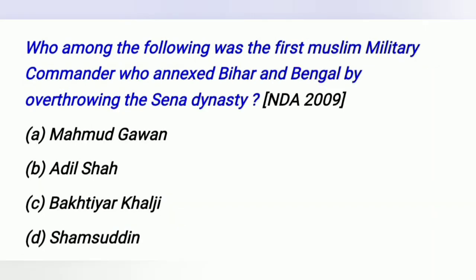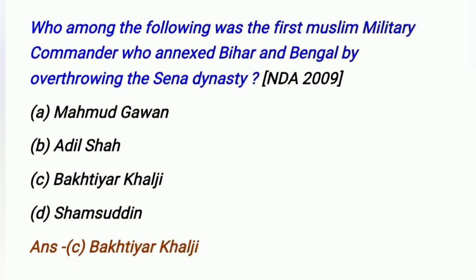Who among the following was the first Muslim military commander who annexed Bihar and Bengal by overthrowing the Sen dynasty? A. Mahmood Gawan, B. Adil Shah, C. Bakhtiyar Khilji, D. Shamsuddin. The answer is Bakhtiyar Khilji.